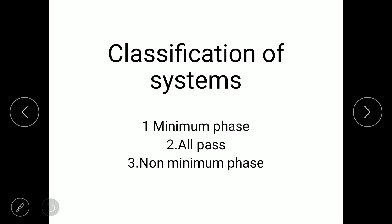Hello guys. In this video we are going to discuss one type of classification of systems. In that type, the systems are categorized in three categories: first is minimum phase system, second is all-pass system, and third is non-minimum phase system.